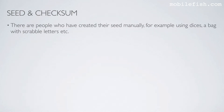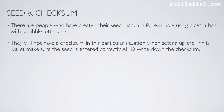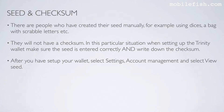However, there are people who have created their seed manually — for example, using dice, a bag with Scrabble letters, etc. They will not have a checksum. In this situation, when setting up the Trinity Wallet, make sure the seed is entered correctly and write down the checksum.